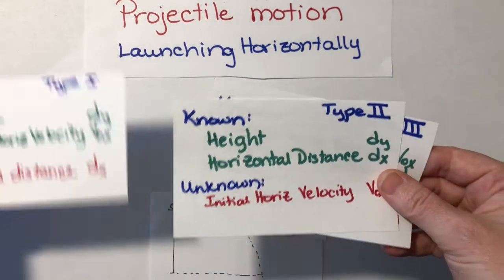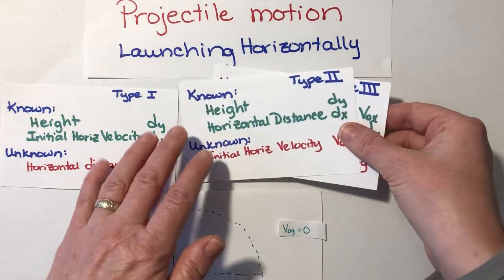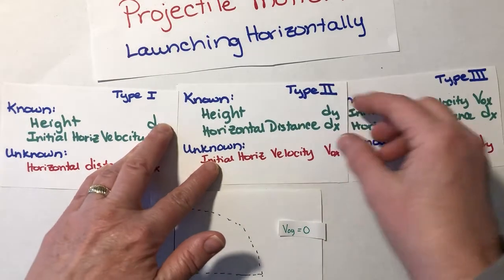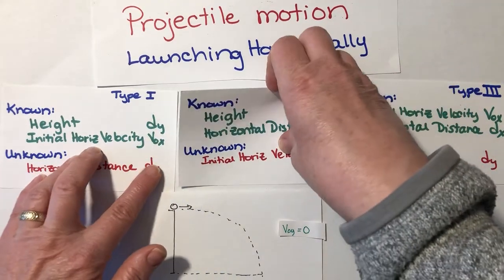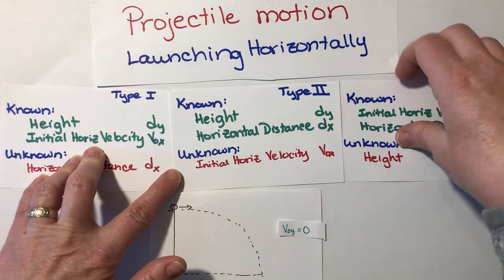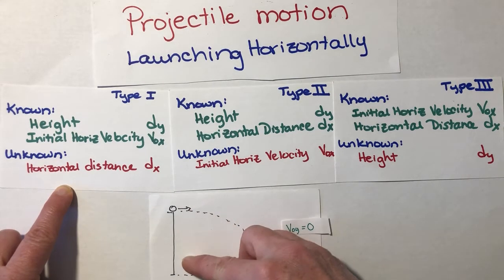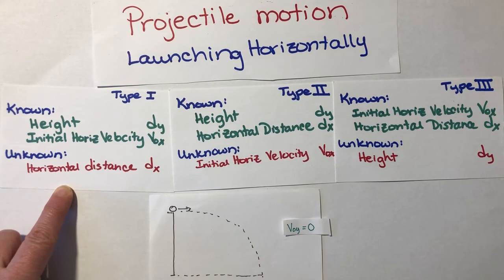They're going to be three different types of problems that we can deal with here. If I list out all the things that I know and the things that I don't know for these three different types of problems, what I will find is I can group them into three different categories. Type 1, Type 1 is what we're going to focus on in this video. That's where I know the height, that's that dy. I know the initial velocity with which the ball was launched horizontally, and I need to find the horizontal distance. That's what my unknown is.